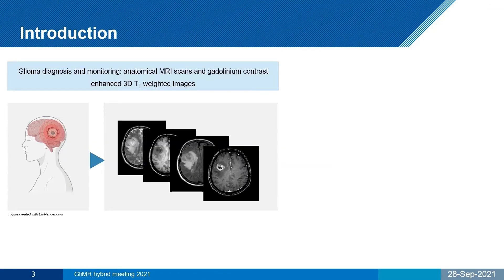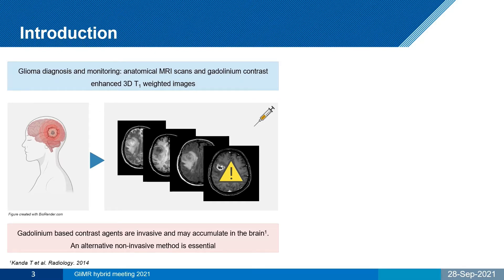Currently, glioma patients undergo a standard MRI protocol for diagnosis and disease monitoring. This includes regular anatomical images and also a gadolinium contrast enhanced T1 scan. However, the use of gadolinium for the latter scan is invasive and there is even evidence suggesting that it may accumulate in healthy tissue such as in the brain. Therefore, the development of an alternative and non-invasive method is essential.